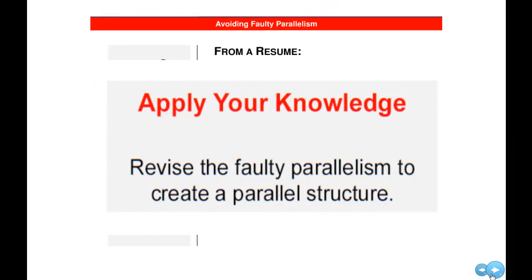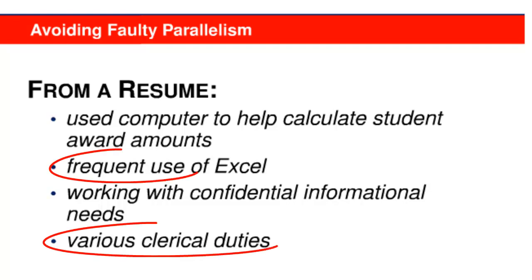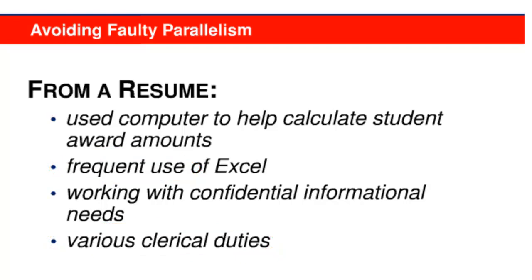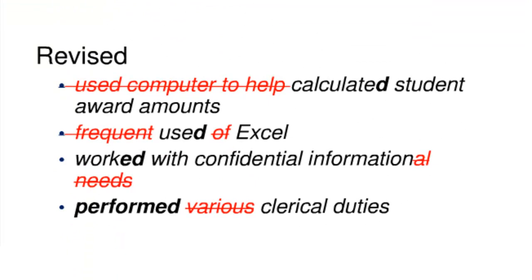Now it's time to check your understanding of parallelism by revising a sentence you haven't seen before. This question asks you to revise to eliminate faulty parallelism. What you see here is a passage from a resume. First, identify the series of items that should be parallel — in this case, because we have a bullet list, there are four items that should be presented in parallel. The first item begins with a past tense verb, so you could revise so that the other three items also begin with past tense verbs. The second and fourth items are noun phrases, so you could revise the first and third into noun phrases. But beginning each item with a verb focuses more on action, which is probably effective in a resume. So the revised version uses past tense active verbs to begin each item in the series.